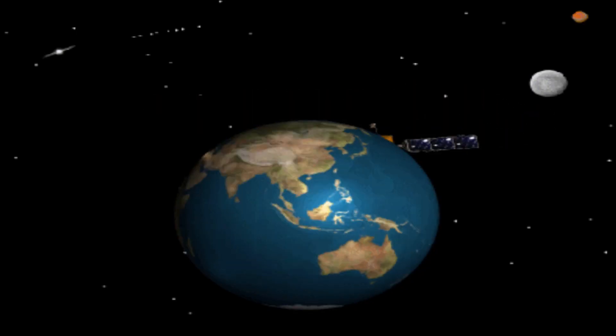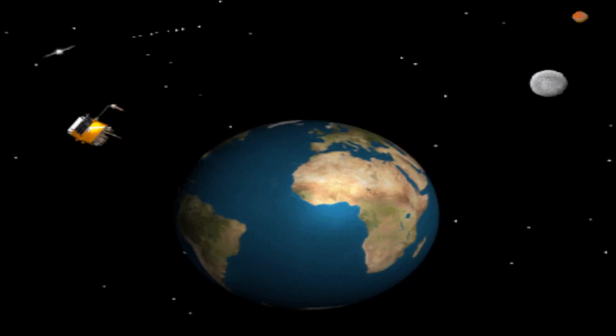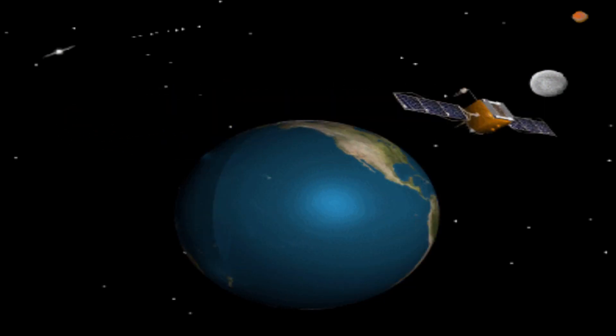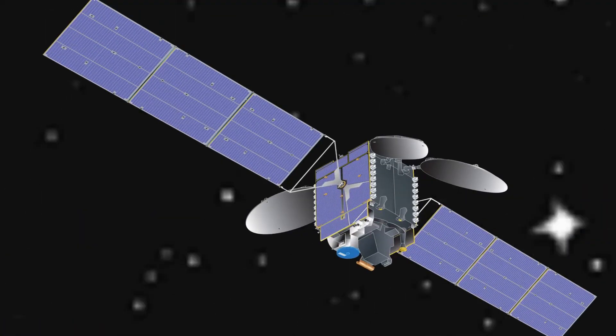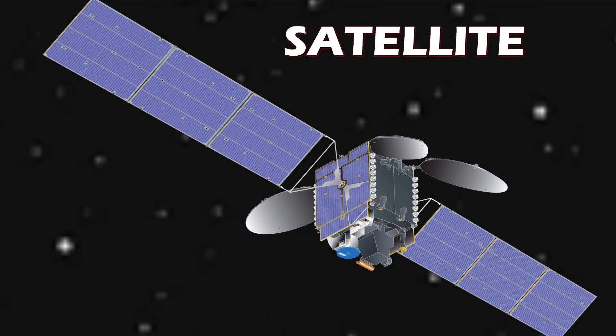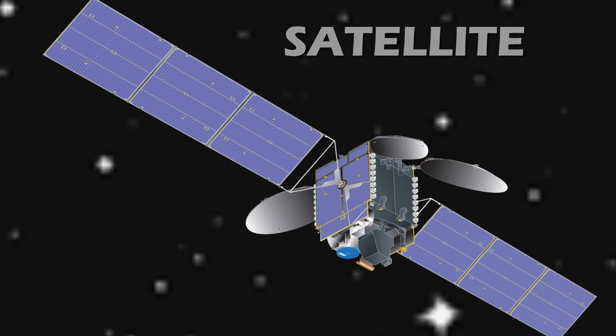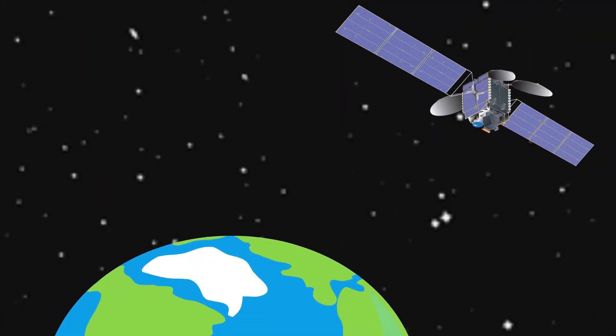Man has made many satellites which revolve around the Earth. In fact, the satellites made by man are machines consisting of many instruments.